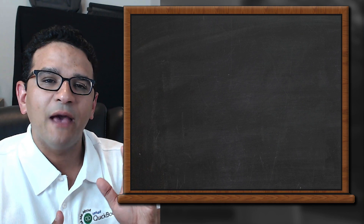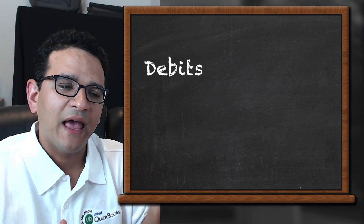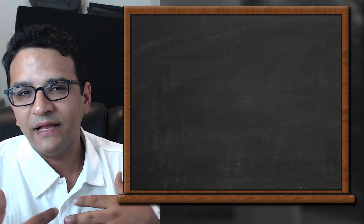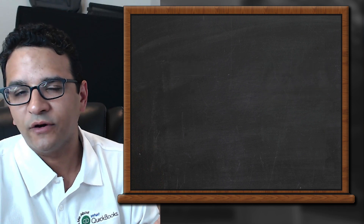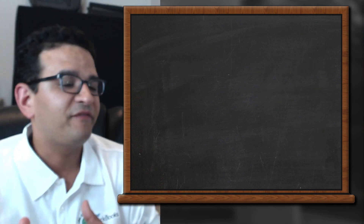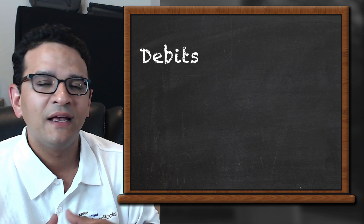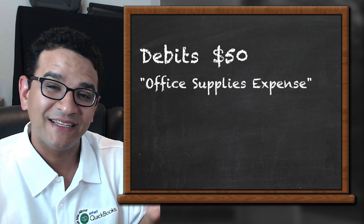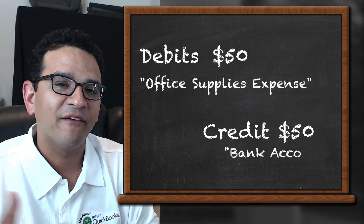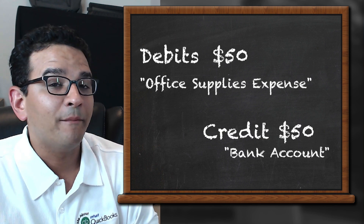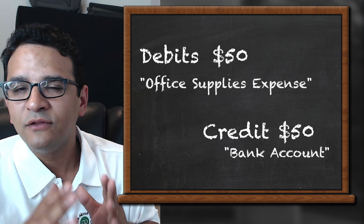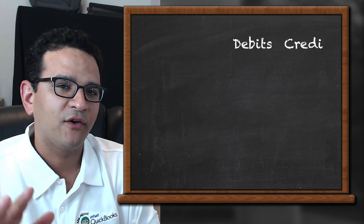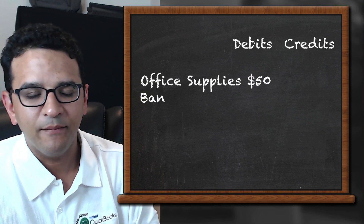For the time being, think of debits as the left side and credits as the right side. A quick example: let's say we go to the office supply store and purchase $50 worth of office supplies. That's going to be a $50 debit to office supplies — an expense account — and a $50 credit to our bank account that was used to make that expenditure.